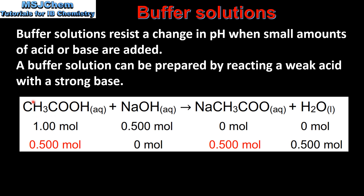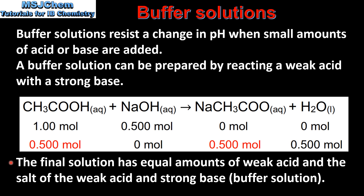In this reaction, ethanoic acid, which is a weak acid, reacts with a strong base, which is sodium hydroxide, to form a salt which is sodium ethanoate and water. The initial amounts in moles of each reactant are 1 mole for the ethanoic acid and 0.5 moles for the sodium hydroxide. The strong base is the limiting reactant, therefore after the reaction we are left with 0.5 moles of ethanoic acid and 0.5 moles of salt. The final solution has equal amounts of weak acid and the salt of the weak acid and strong base, which is a buffer solution.